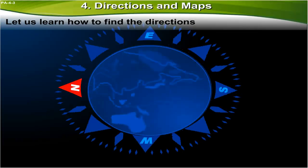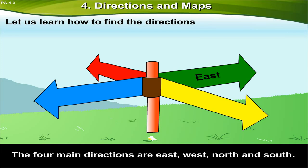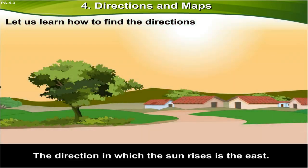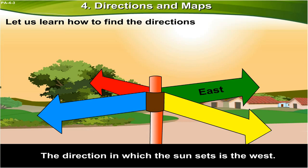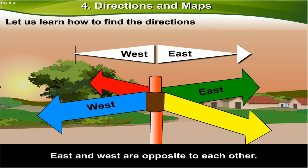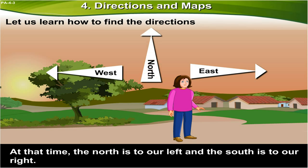Let us learn how to find the directions. The four main directions are east, west, north, and south. How do we find them? Well, let me help you. The direction in which the sun rises is the east. The direction in which the sun sets is the west. East and west are opposite to each other. If we stand facing east, the west is behind us. At the same time, the north is to our left and the south is to our right.